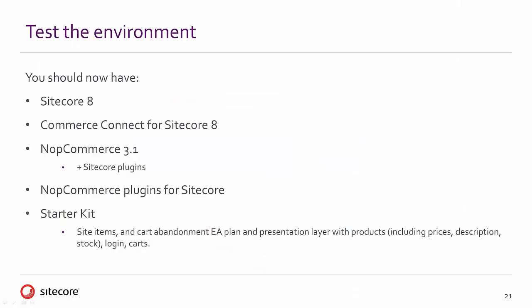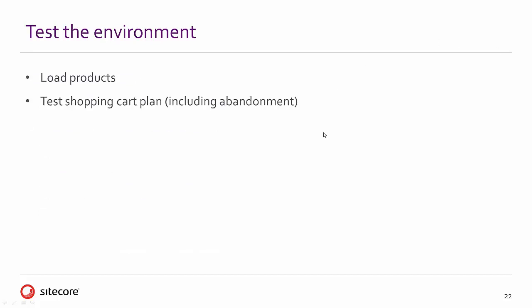You should now have Sitecore 8 with Commerce Connect, NopCommerce 3.1 with the Sitecore plugins, the NopCommerce connector on the Sitecore side, and the starter kit — our MVC presentation layer. That includes the site items for product pages, the cart abandonment engagement plan, and the presentation layer including prices, descriptions, stock, login, and carts. The next step is to load the products and test the shopping cart, including shopping cart abandonment.